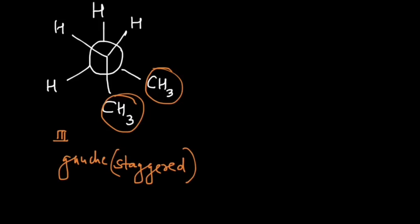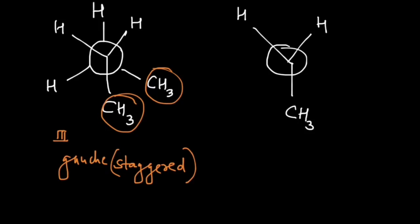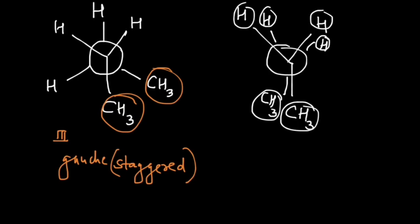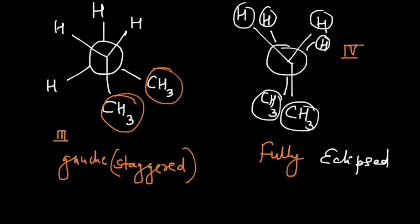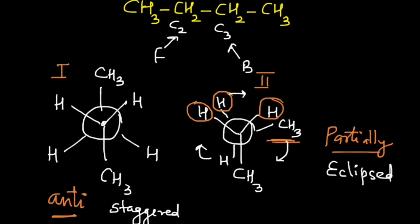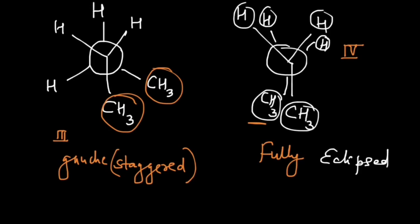Rotating once more gives us another eclipsed form. The front carbon has CH₃, H, and H. Now the back CH₃ comes directly behind the front CH₃, and the H atoms eclipse each other as well. All the groups are completely hiding each other, so this is the fully eclipsed form — structure number four — whereas the earlier one was only partially eclipsed.